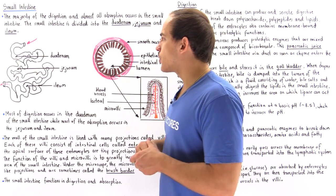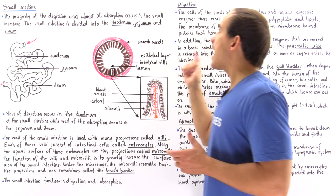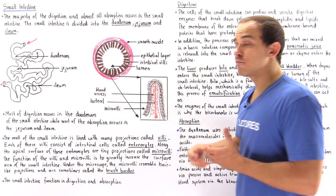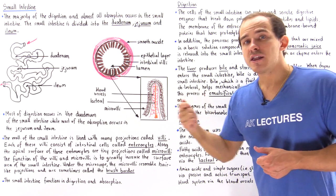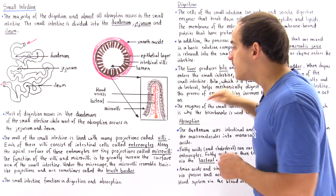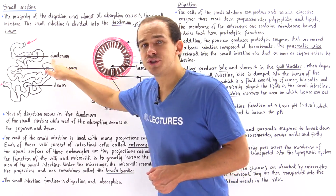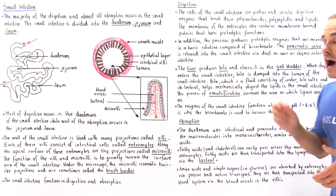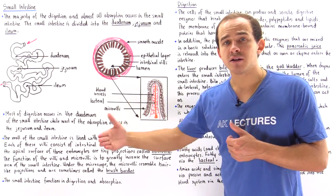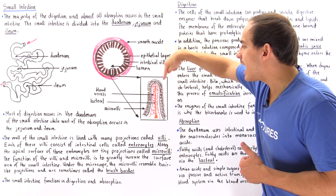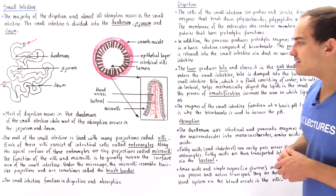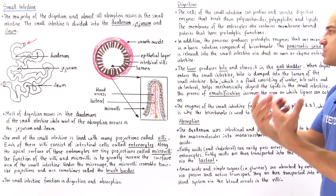Inside the duodenum, digestion takes place. The cells in this region produce proteolytic enzymes that break down polysaccharides, polypeptides, and lipids. Additionally, the brush border in the duodenum contains proteolytic enzymes attached to the membrane of the enterocytes. When macromolecules approach these microvilli, those membrane-bound enzymes break the macromolecules down into smaller units.